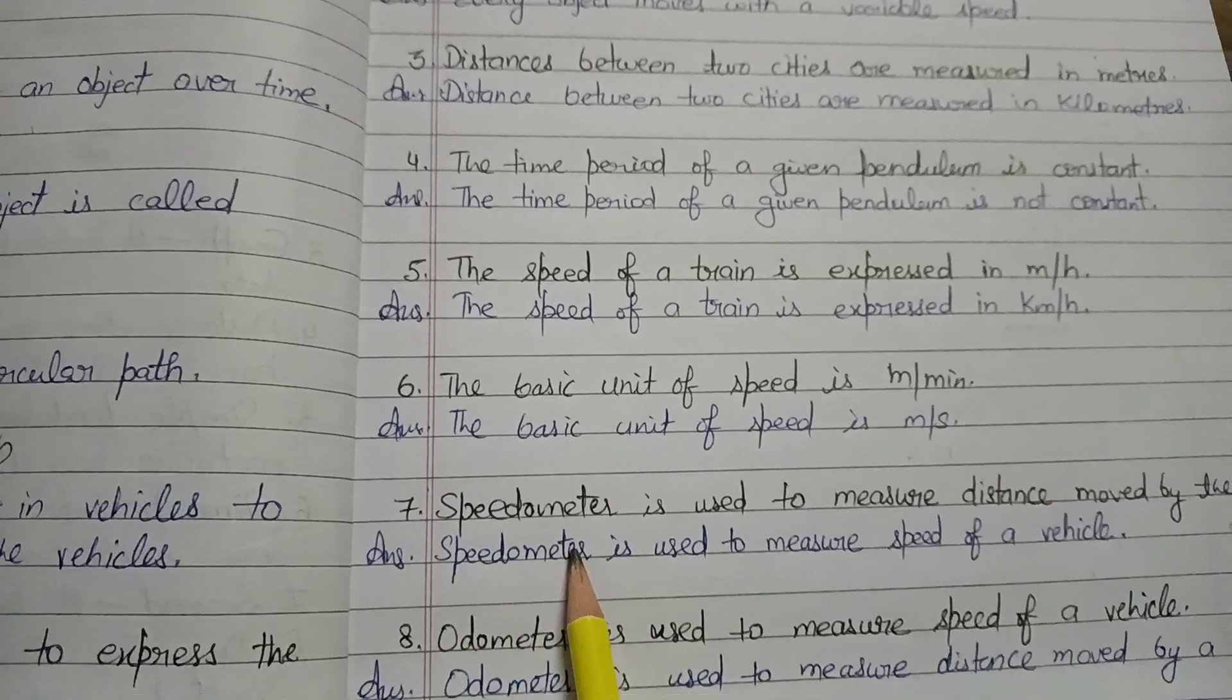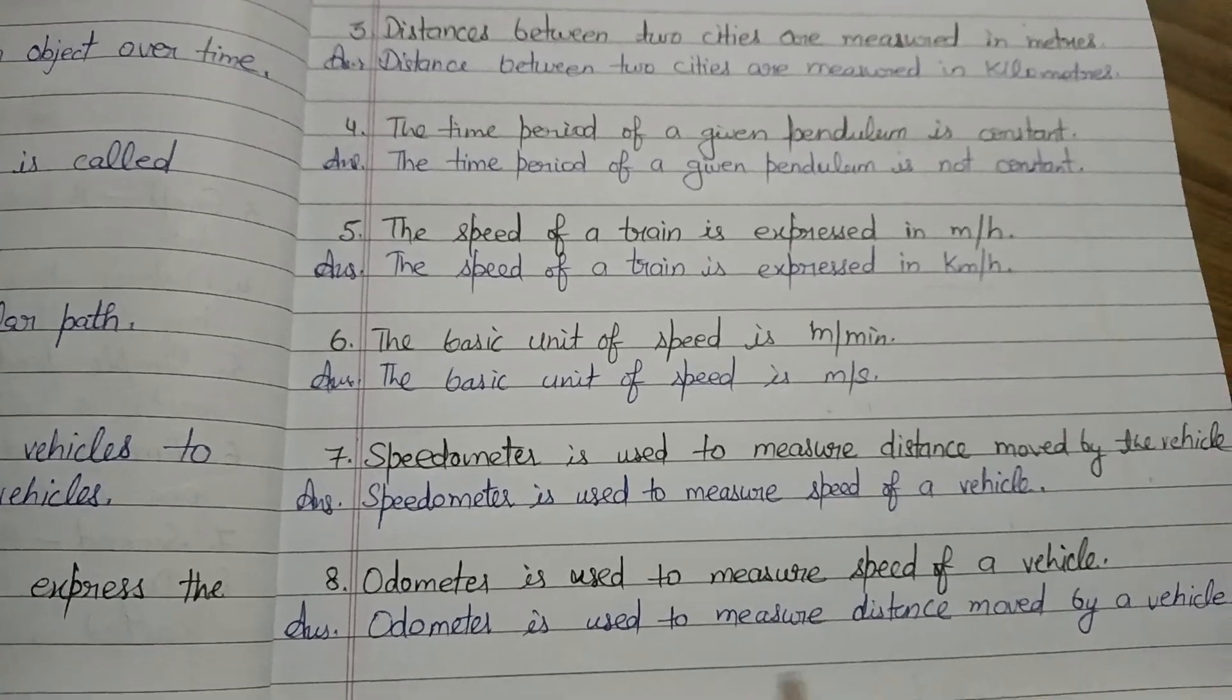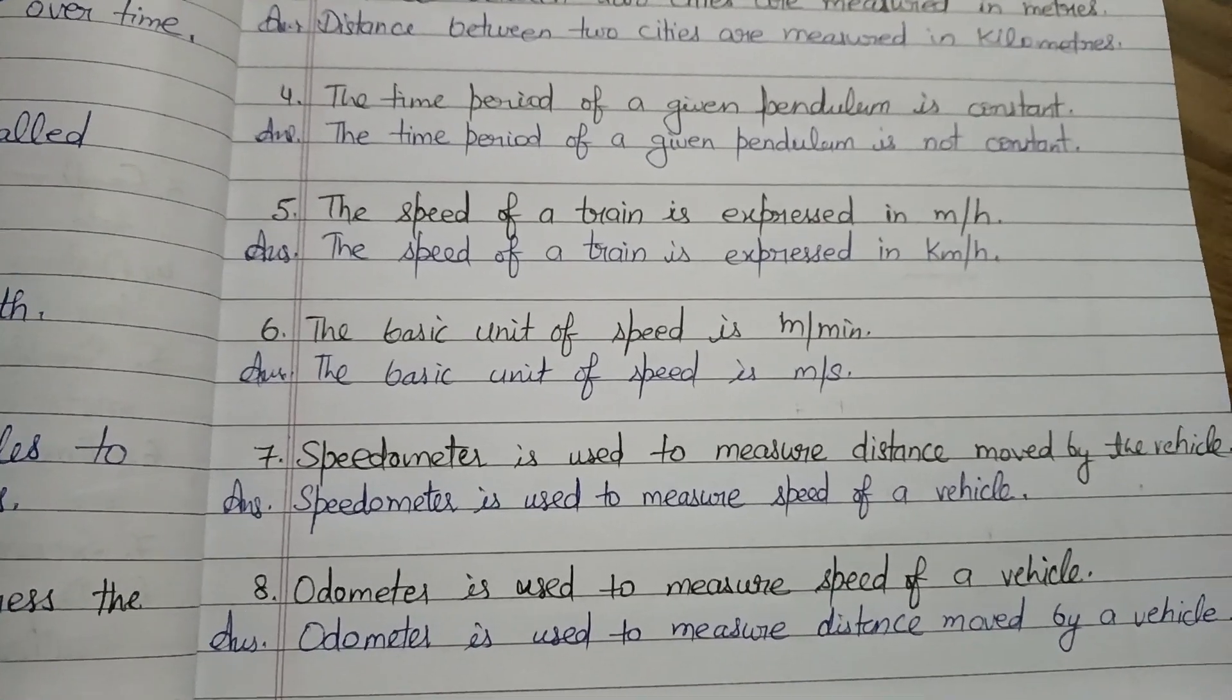Speedometer is used to measure distance moved by a vehicle - that is speedometer is used to measure speed of vehicle. Aur ya phir aap speedometer ke jagah odometer bhi likh sakte hain, that is also correct. Odometer is used to measure distance moved by vehicle. Thank you.